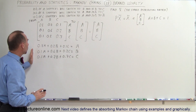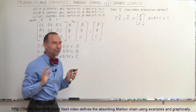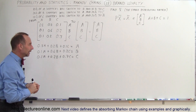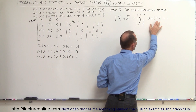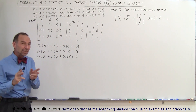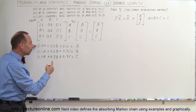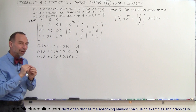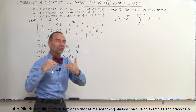We also have the constraint A + B + C = 1. The strategy is to take two of the three equations, solve one for a variable in terms of the other two, substitute into a second equation to eliminate one variable, then plug those expressions back into the constraint equation.